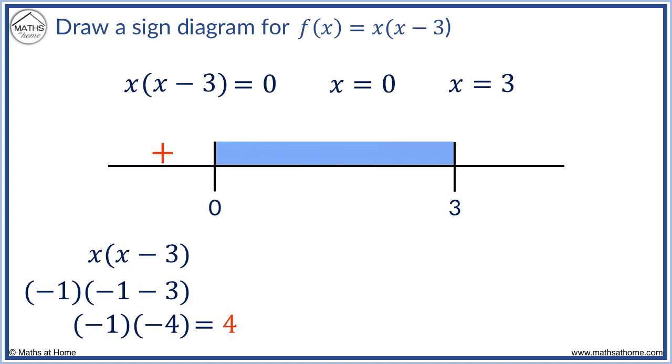Now we look at this region. We select a value of x between 0 and 3. We choose 1. X brackets x minus 3 becomes 1 brackets 1 minus 3 which is 1 minus 2 which equals minus 2. This is a negative result.